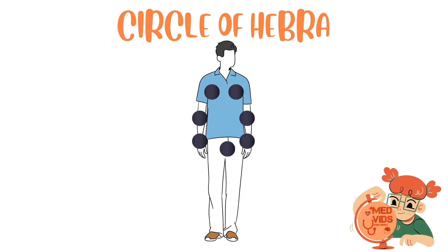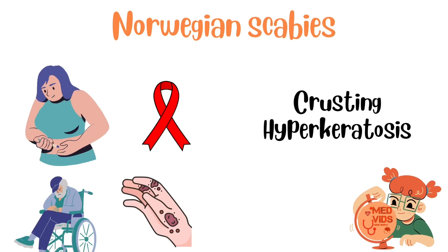The areas commonly involved by scabies include the axilla, elbow, wrist, and groin. These areas, if connected by dots, assemble a circle, so this is called the Circle of Hebra. There is also a special type of scabies called Norwegian scabies.